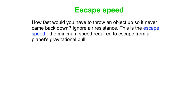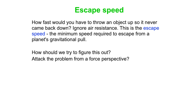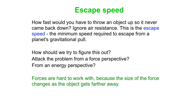Let's apply this to the scenario of how fast you have to throw an object up so it never comes back down — neglecting air resistance. This is the escape speed: the minimum speed required to escape a planet's gravitational pull. Should we use forces or energy? Forces are really hard to work with because the force steadily changes as the object moves away from Earth. Instead, we can apply energy conservation — since we're ignoring air resistance, we only need the energy at point A and point B.